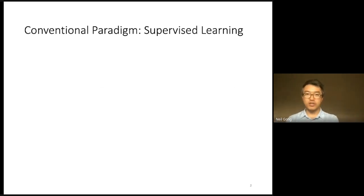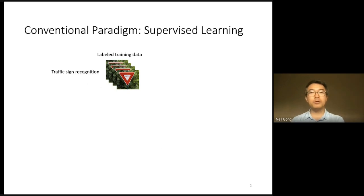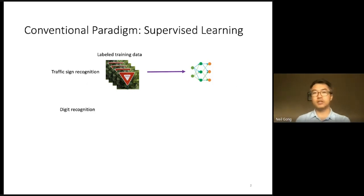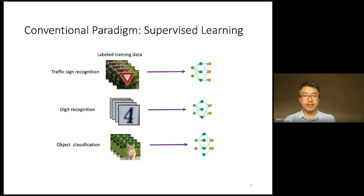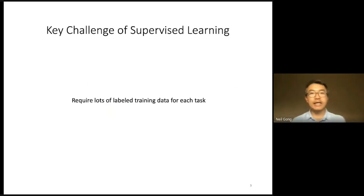As you know, supervised learning is a very popular conventional machine learning paradigm. Suppose we are given a learning task such as traffic sign recognition. Supervised learning first requires manually labeling a large amount of traffic signs and then training a classifier. Given other learning tasks such as digit recognition, supervised learning again requires manually labeling a large amount of digits and then training a classifier. This process is repeated for each individual task. So the key challenge of supervised learning is that it requires a large amount of labeled training data for every task.